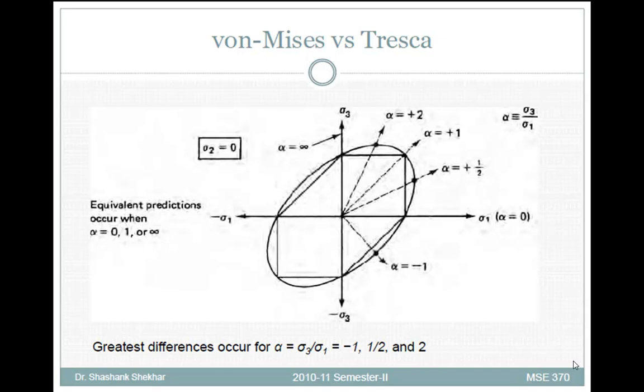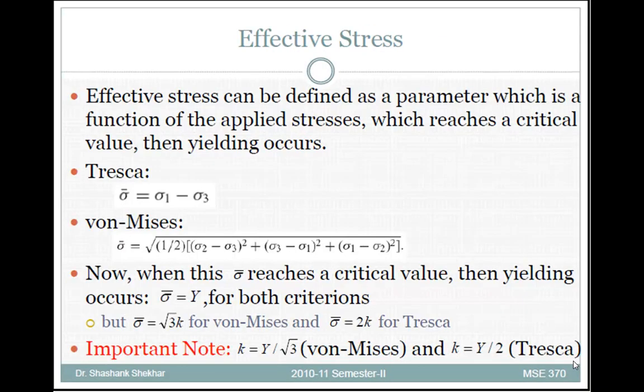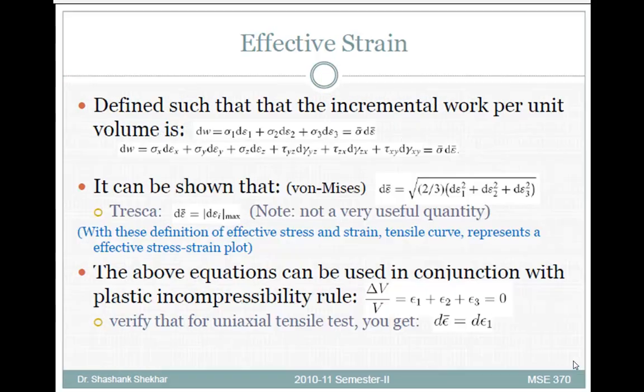The effective stress for the Tresca case is σ₁ − σ₃, while for the von Mises case it is given by the corresponding deviatoric formula. It is important to remember that K = Y/√3 for von Mises, and K = Y/2 for Tresca.